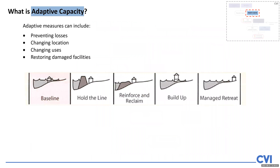What is adaptive capacity? Adaptive capacity can be seen to be many things. The sorts of measures can include things like preventing loss from climate change, perhaps changing the location of some of your facilities, changing their use, or restoring damaged facilities. This little diagram across the middle shows well what adaptive capacity might involve.